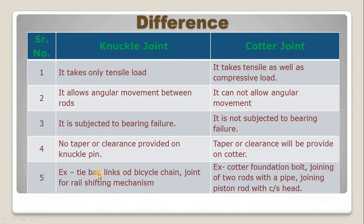Applications of the knuckle joint include tie bar, link of bicycle chain, and joint for rail shifting mechanism. Applications of the cotter joint include cotter foundation bolt, joining of two rods with a pipe, and joining of piston rod with crosshead.